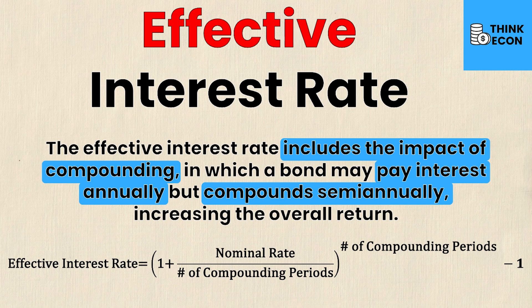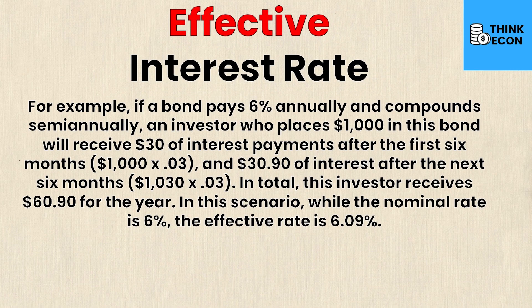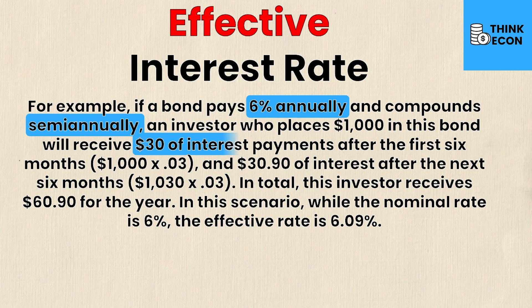Let's take a look at an effective interest rate example. A bond pays six percent annually — that's the nominal interest rate — and it compounds semi-annually. The investor places one thousand dollars in this bond and receives thirty dollars of interest for the first six months, because that's the first half of the semi-annual compounding period. This thirty dollars is simply one thousand times 0.03, which is three percent of one thousand.